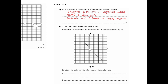Now part B: a mass is undergoing oscillation in a vertical plane. The variation with displacement x of the acceleration a of the mass is shown in figure 3.1. State two reasons why the motion of the mass is not simple harmonic. For SHM, the graph has to be a straight line. Here is a, here is x, from minus amplitude to amplitude, and a equals minus omega squared x.